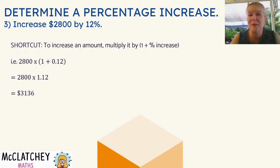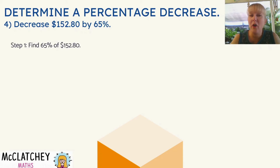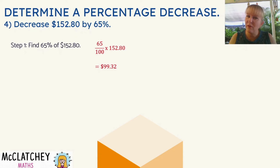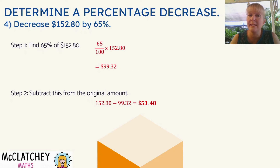Now pause the video for the next worked example and see if you can work it out by yourself. We're going to decrease $152.80 by 65%. I'm going to show you the long way and then the shortcut. Step one: find 65% of $152.80 — that's 65 over 100 times $152.80, which is $99.32. That's what 65% of it is, but we haven't decreased it yet. Obviously when we decrease something, our final answer is going to be smaller, and this is where people forget the next step — they've already got a smaller answer so they think they're done. But we haven't actually decreased it yet. We've got to subtract that from our original amount: $152.80 minus $99.32 gives us $53.48. That's our final answer — that's the long way.